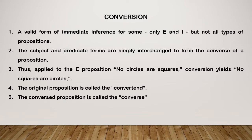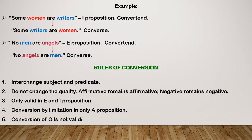The original proposition is referred to as the convertent and the conversed proposition is called the converse. Now look at this convertent, the I proposition: 'Some women are writers.' Before the copula we get the subject term which is woman, and after the copula we get the predicate term which is writers. In the converse, they will be interchanged, so 'some writers are women.' Another example: 'no men are angels' — in the converse we write 'no angels are men.'